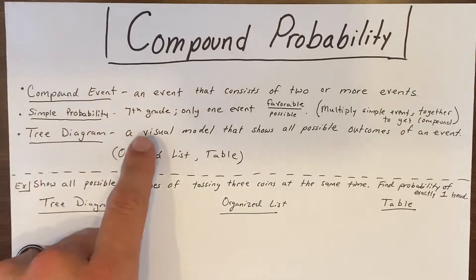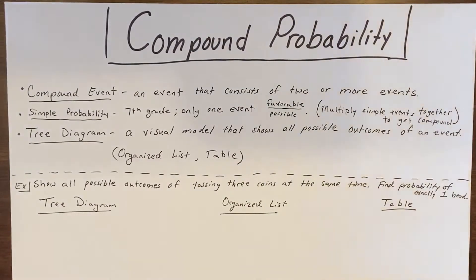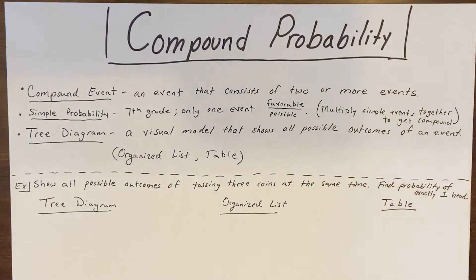In simple probability there's usually only one event and you write your probability as a fraction. The numerator is your favorable outcome, or what you're trying to get. For example, if you roll a six-sided die and want to land on a one — there are six sides numbered one through six — so one goes in the numerator and there are six possible outcomes. Your probability would be one over six because there's just one event.